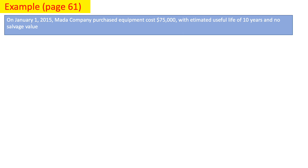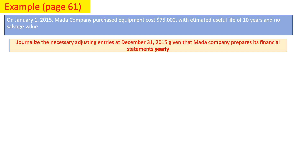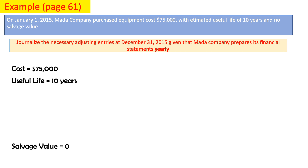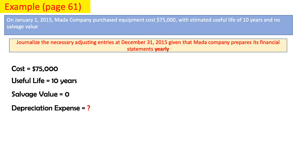Let's take an example. On January 1, 2015, Mother Company purchased equipment for $75,000 with an estimated useful life of 10 years and no salvage value. Journalize the necessary adjusting entries at December 31, 2015, given that Mother Company prepares its financial statements yearly. First, we identify: cost = $75,000, useful life = 10 years, and salvage value = zero.